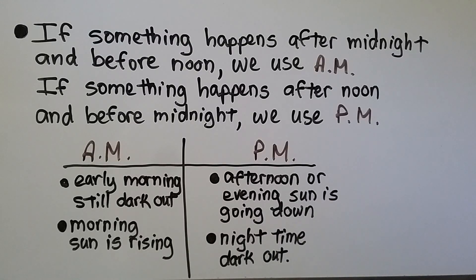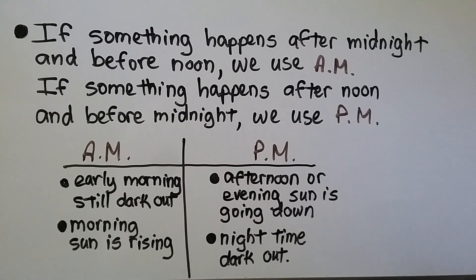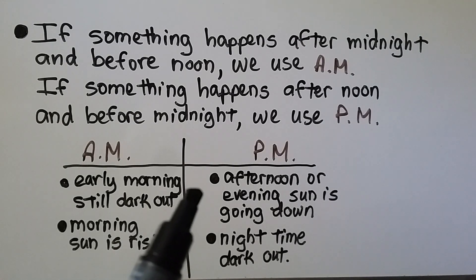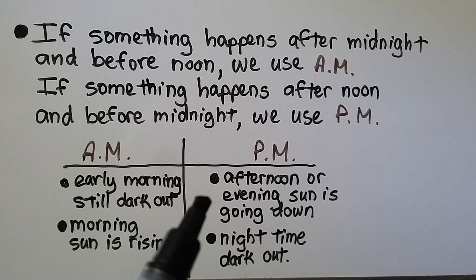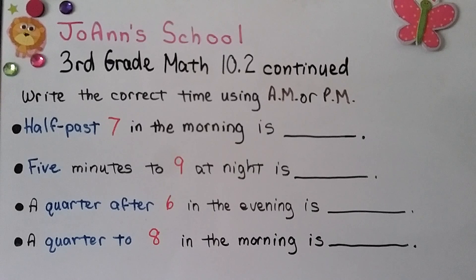If something happens after midnight and before noon, we use A.M. If something happens after noon and before midnight, we use P.M. A.M. is early morning when it's still dark out, or morning when the sun is rising. P.M. is the afternoon or evening when the sun is going down, or it can be nighttime and dark out.